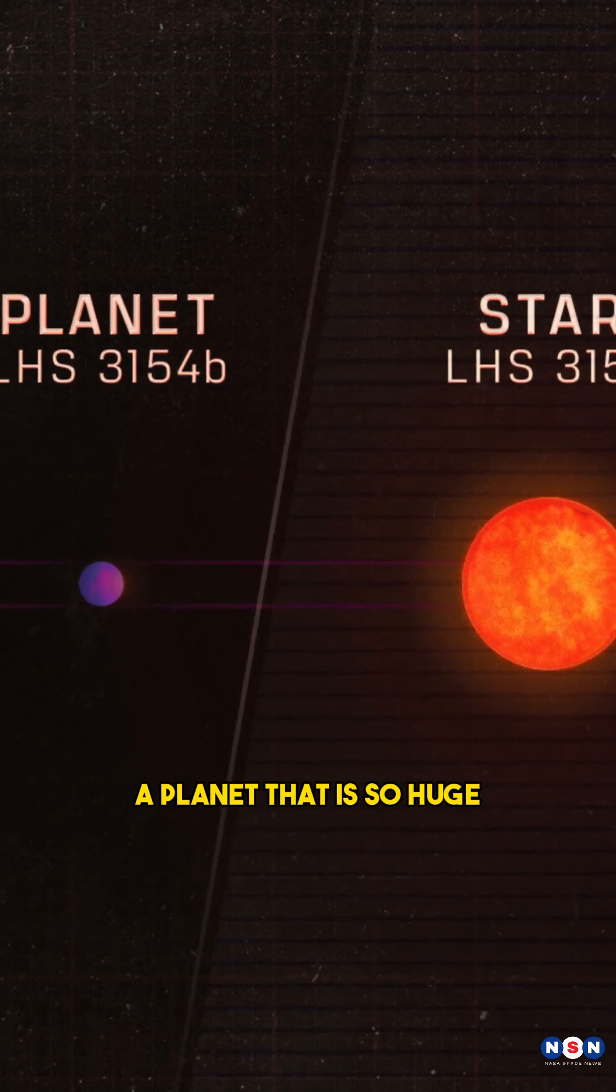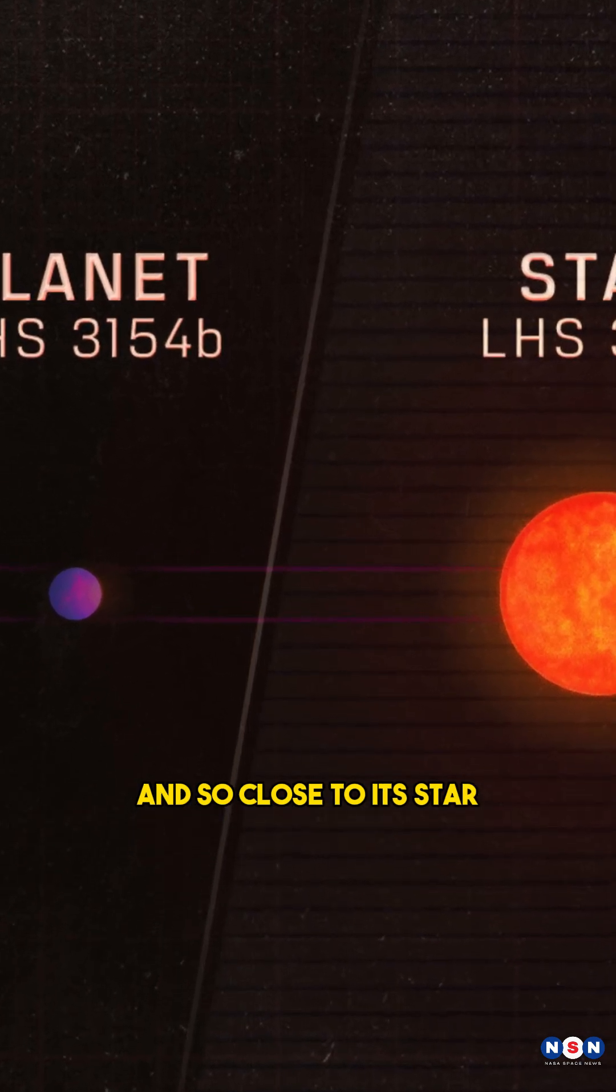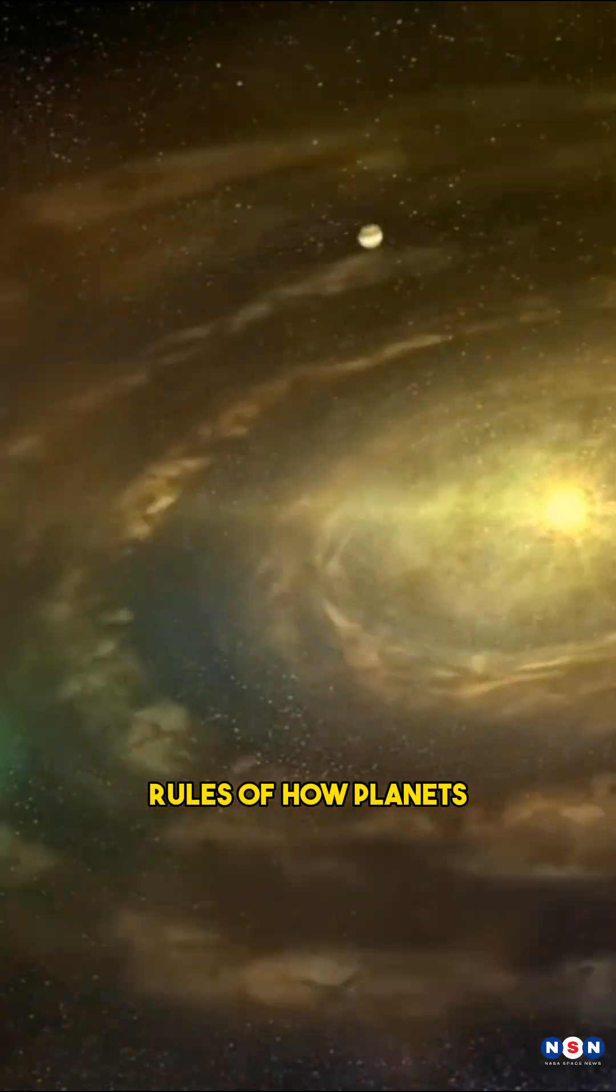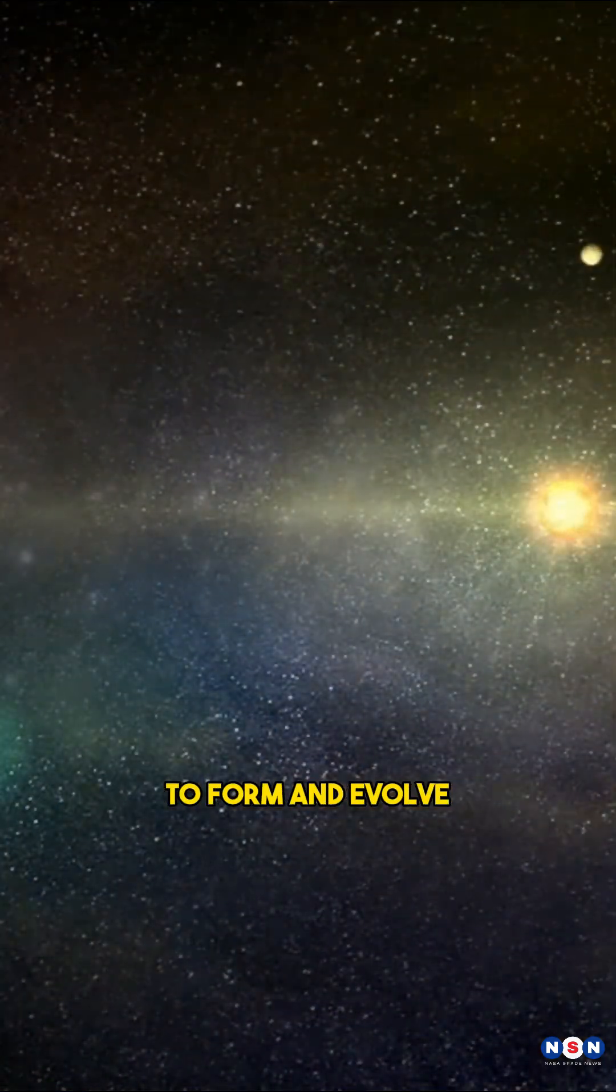Astronomers just found a planet that is so huge and so close to its star that it breaks all the rules of how planets and stars are supposed to form and evolve.